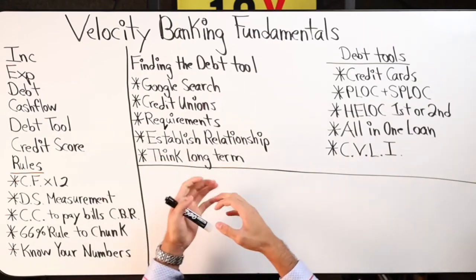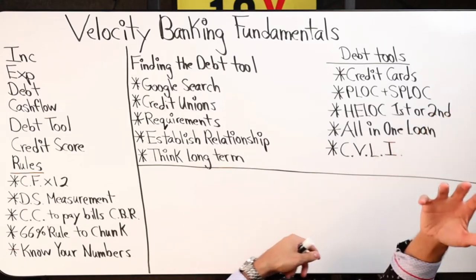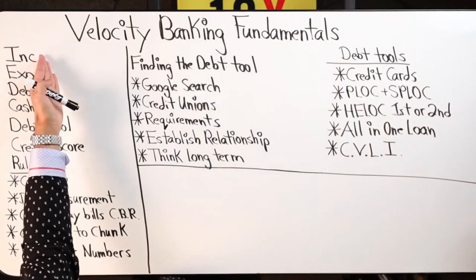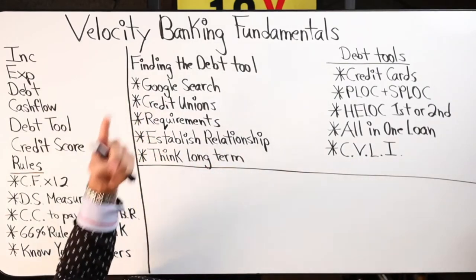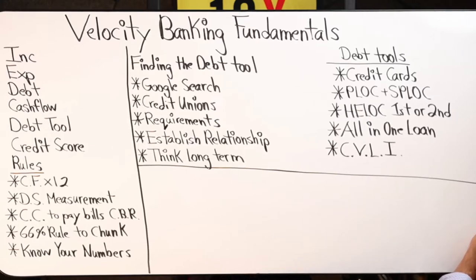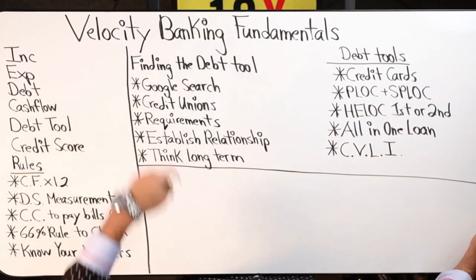The end game is to 10x your lifestyle — which simply means to take whatever you're making today and multiply it by 10. If you do that at least once in your life, I can say with 100% conviction that I personally believe over 90% of your money problems would get solved if you just went from what you're making today and multiplied it by 10.